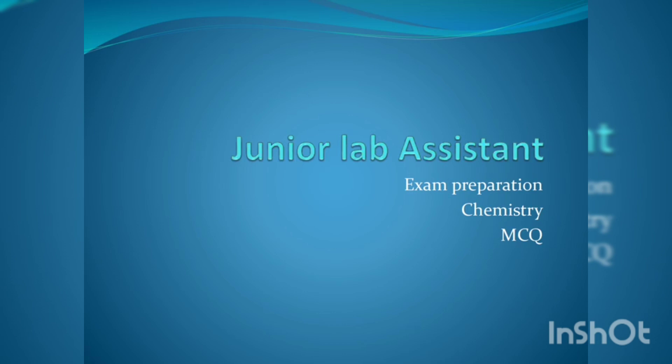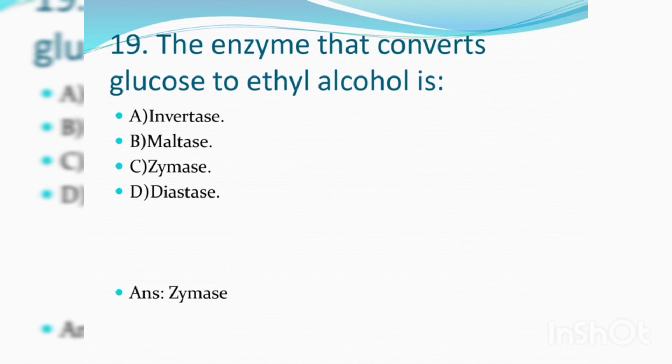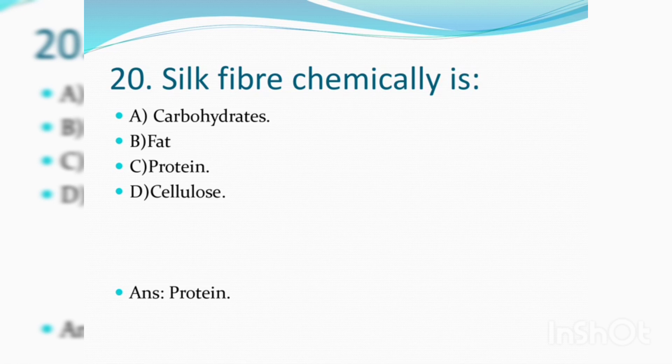Question Number 90: The enzyme that converts glucose to ethyl alcohol is? Answer is Option C: Zymase. Question Number 91: Silk fiber chemically is? Answer is Option C: Protein.